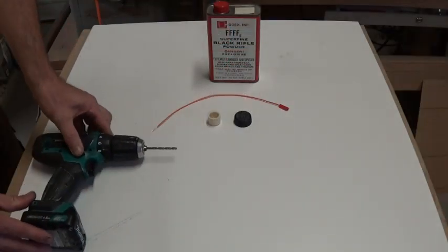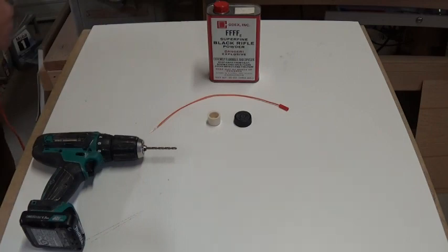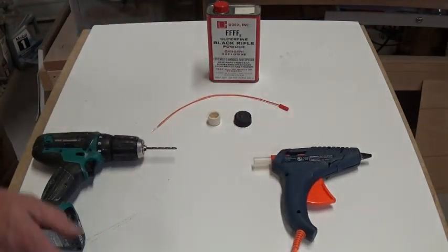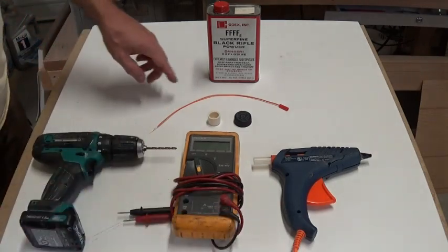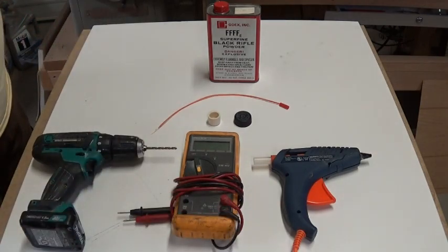And then some tools we'll need. We've got a drill. We'll need a hot melt glue gun and then we've got a digital voltmeter so that we can check the continuity on the e-match.